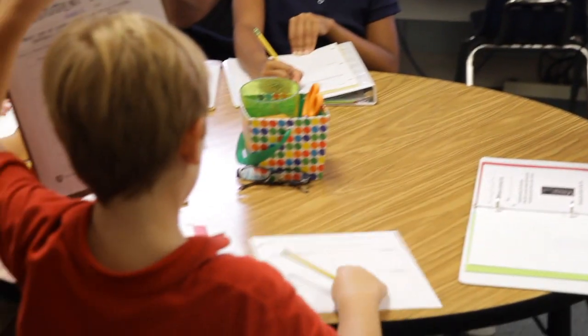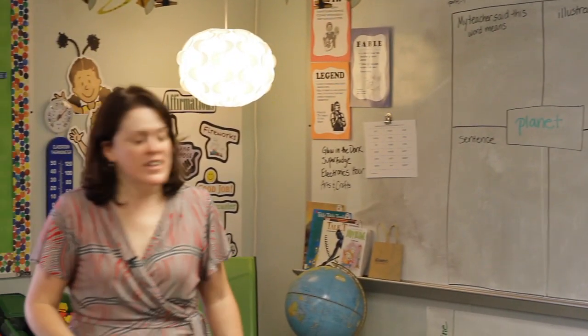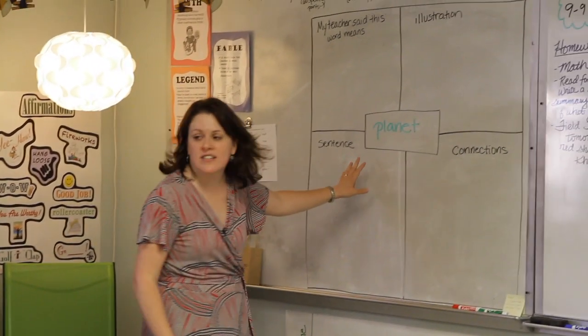I either put the copy up on our TV screen for them to see as I write down each section — what goes in each section — or I use the board. I put a copy of this Frayer model on the board for us to look at.